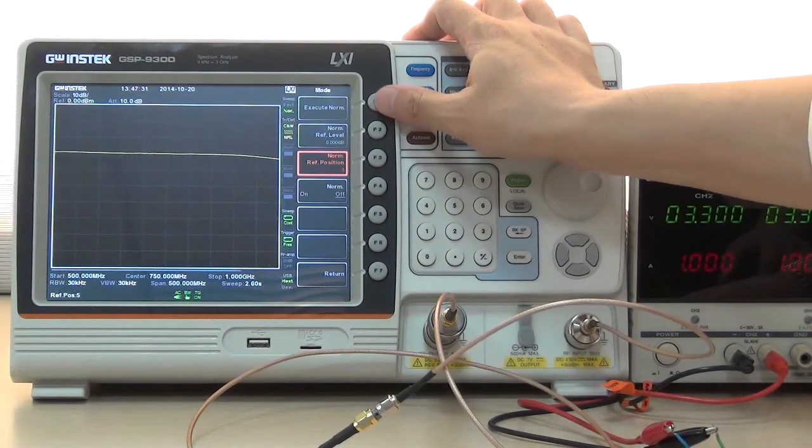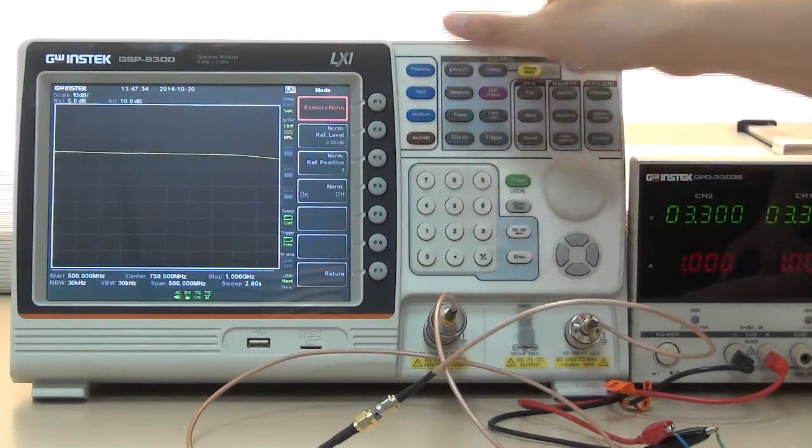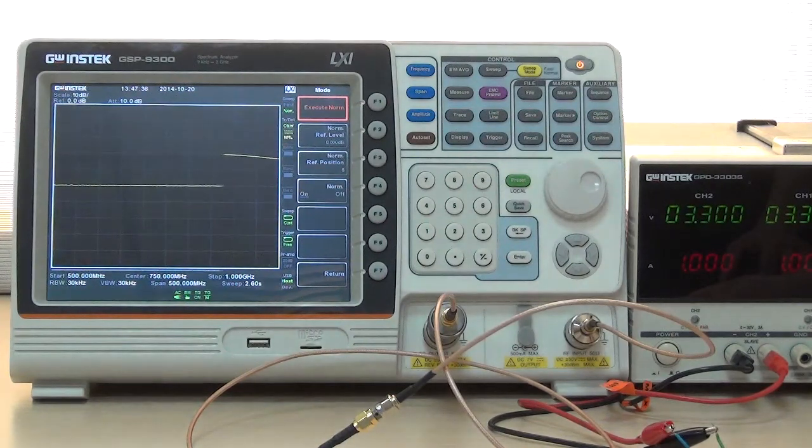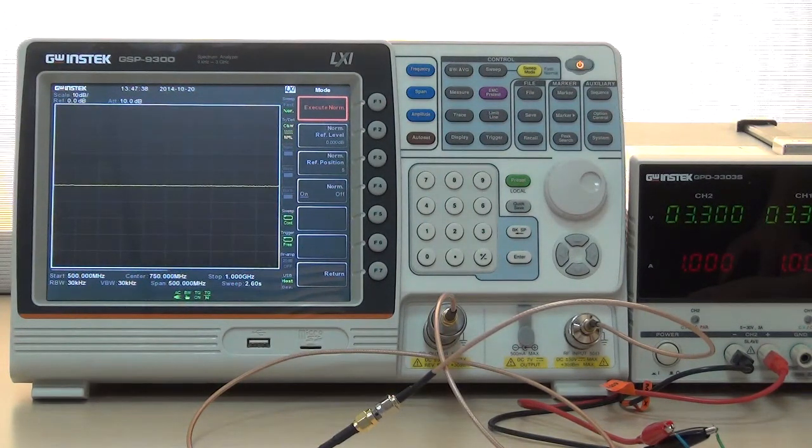Next, press F1 to execute Normalization. After completing Normalization, disconnect SMA RF cable and adapter. Next, connect Low Noise Amplifier Component to conduct Scalar Network Analysis Test.